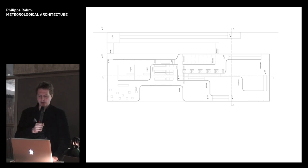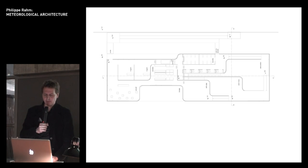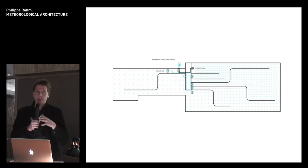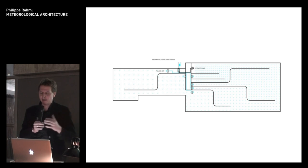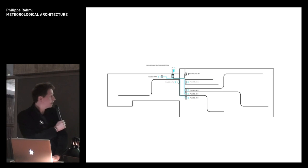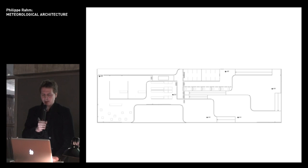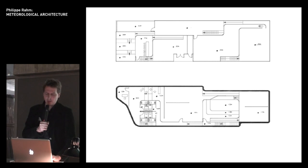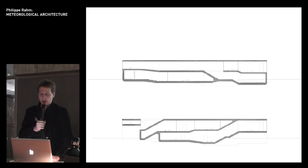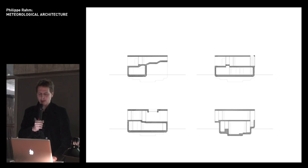We applied the same logic: fresh air arrives from two sources, and the building becomes like a river — first a small river of air that grows bigger. Where there is little air renewal, we place the entrance; where there is more, a yoga room; then a sport room; an intensive sport room; and finally a shower. There is a continual flow of air moving from entrance to exhaust through the building.